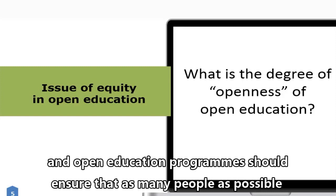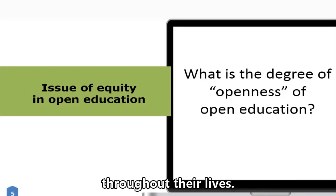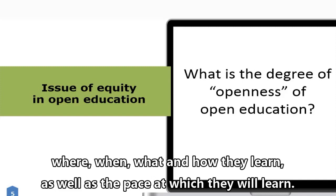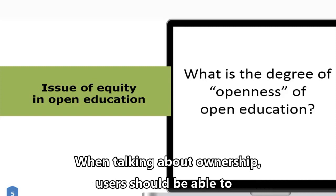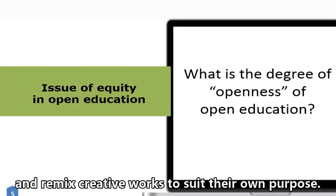Access is very important because it is the whole essence of open education, and open education programs should ensure that as many people as possible are able to take advantage of affordable and meaningful educational opportunities throughout their lives. For agency, learning provisions should permit learners to increasingly decide where, when, what, and how they learn, as well as the pace at which they will learn. When talking about ownership, users should be able to use, revise, redistribute, and remix creative works to suit their own purpose.